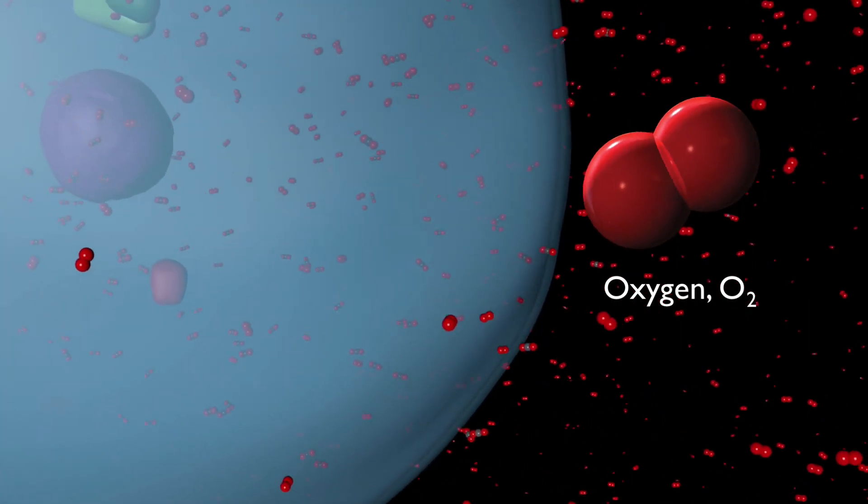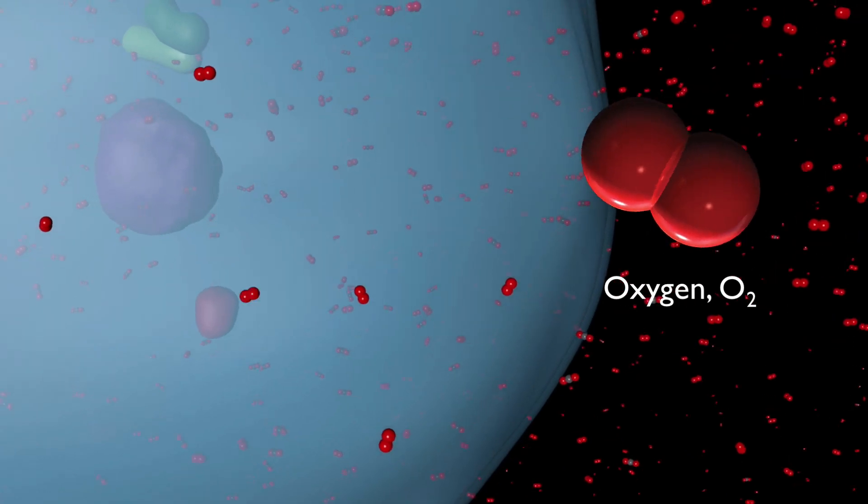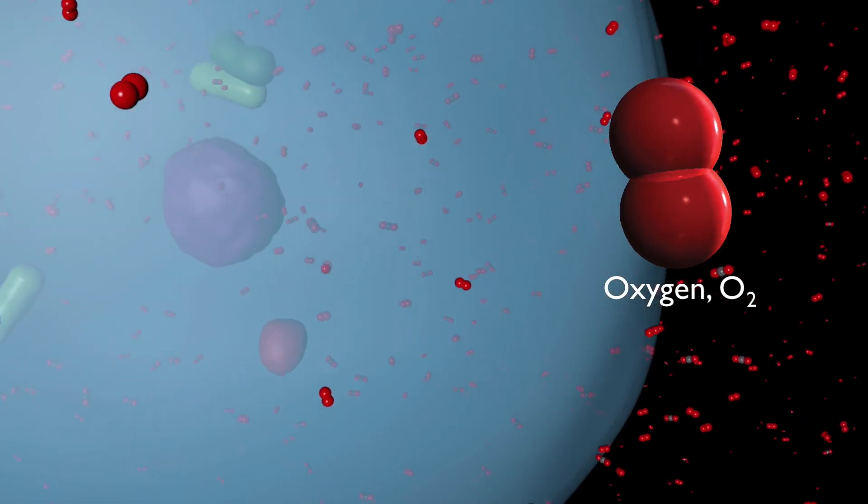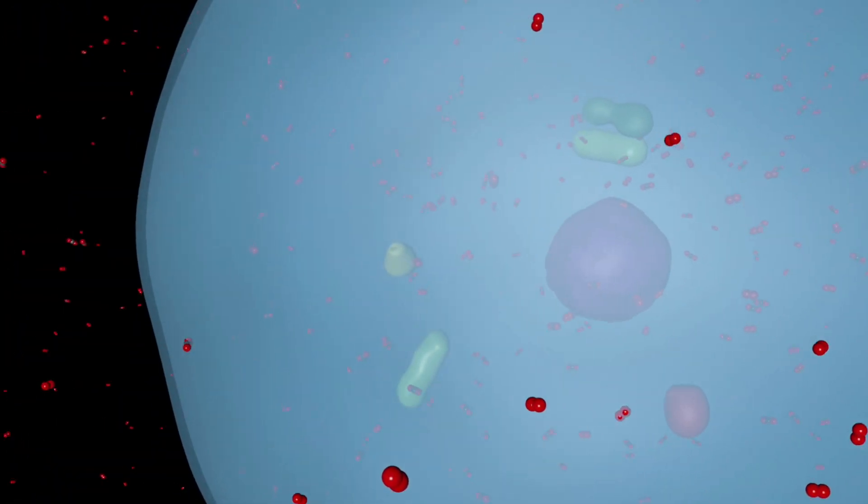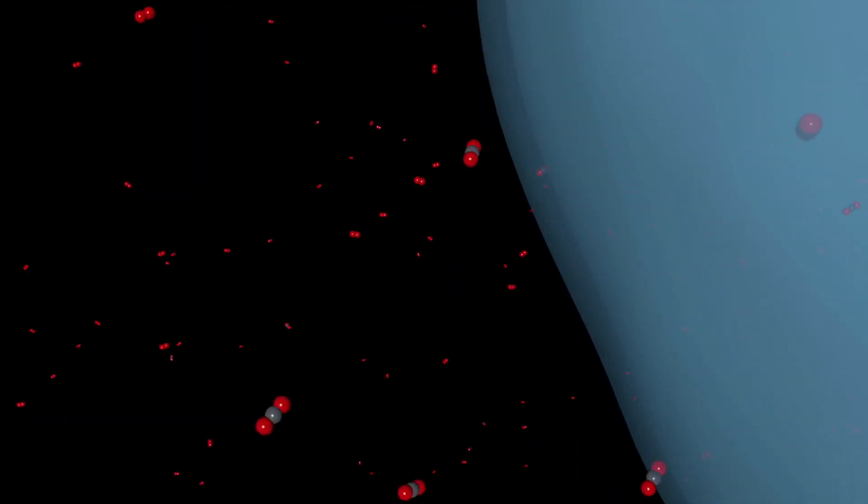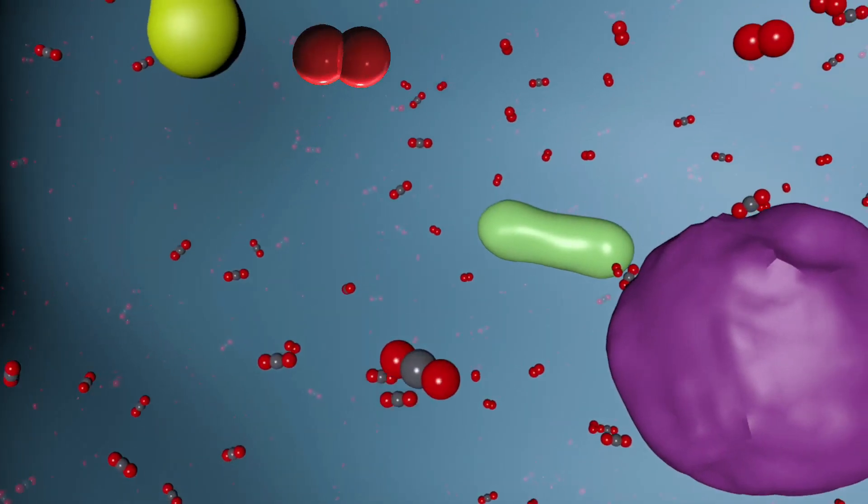This oxygen, which is a tiny molecule, naturally diffuses through the cell membrane and into the cell, where it then also diffuses into these organelles called mitochondria.